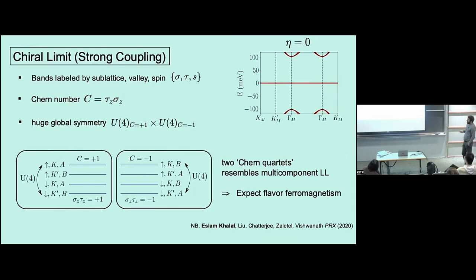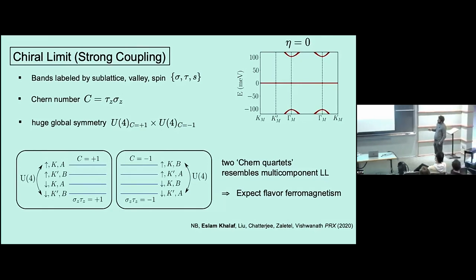There's an additional nice feature: if you project the model onto the flat bands — which we can do because the gap to the remote bands is very large — we find that both the kinetic term, which is now zero, and the interaction term (the leading part) actually have a very large U(4) × U(4) symmetry. Basically, if we divide the flat bands into two sets of four bands — each set having Chern number +1 or −1 — then each U(4) corresponds to arbitrary unitary rotations within a set of four bands with the same Chern number, and this is a symmetry of the Hamiltonian.